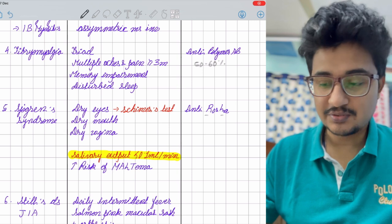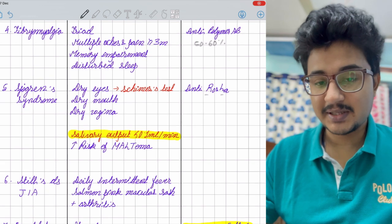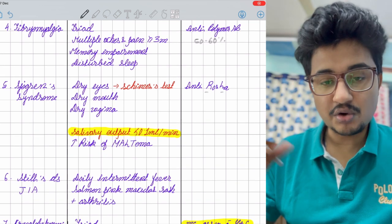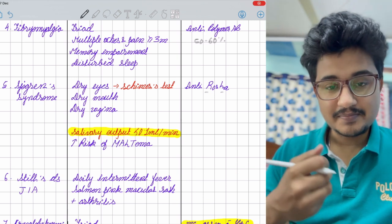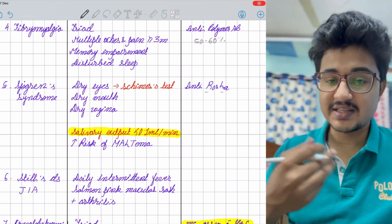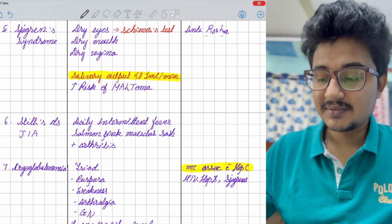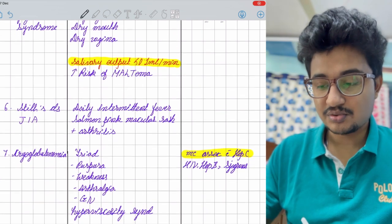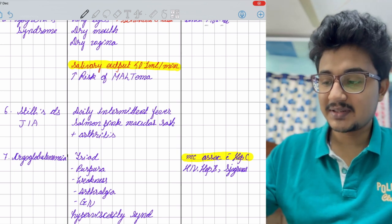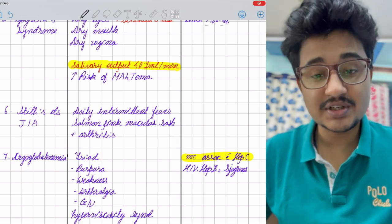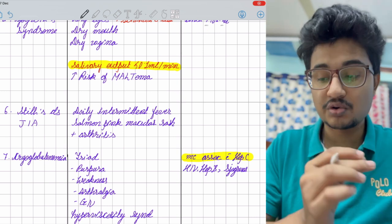Still's disease or juvenile rheumatoid idiopathic arthritis shows daily intermittent fever with arthritis and salmon pink macular rash. This is positive for HLA-B27. Cryoglobulinemia shows a triad of purpura, weakness, arthralgia, and glomerulonephritis. It's most commonly associated with Hepatitis C. The extra-articular manifestations of Hepatitis C are due to cryoglobulins that precipitate at 37 degrees Celsius.